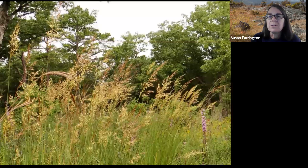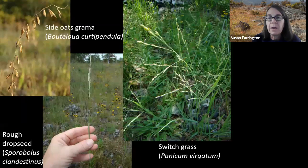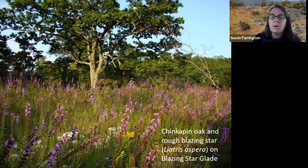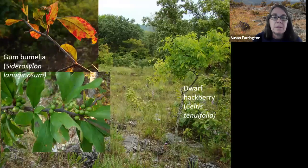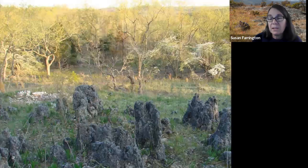In addition to these wildflowers, warm season grasses are found in abundance, including little bluestem, big bluestem, and Indian grass. Also side-oats grama, rough dropseed, and switchgrass — these are only some of the grasses you'll find on glades. Woody species found on dolomite glades include chinkapin oak and post oak, gum bumelia and dwarf hackberry. Dogwoods and redbuds, both of which are less fire tolerant than the above species, can become overly abundant in the absence of fire. We'll talk about eastern red cedar later.